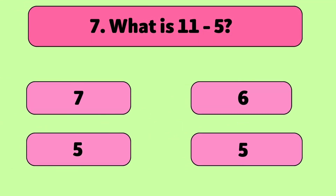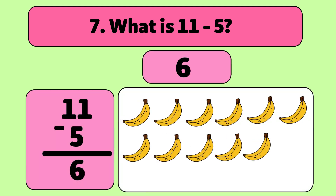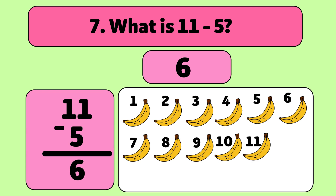What is 11 minus 5? The answer is 6. We start with 11 bananas and take away 5. Let's count: 1, 2, 3, 4, 5. We have 6 bananas now.